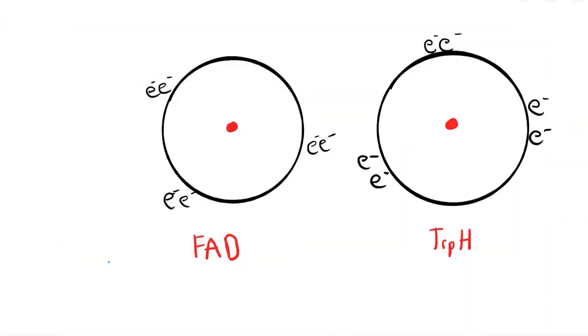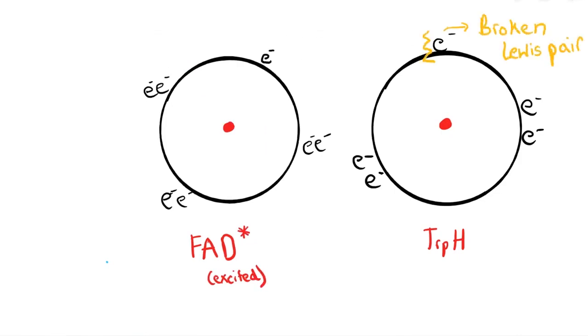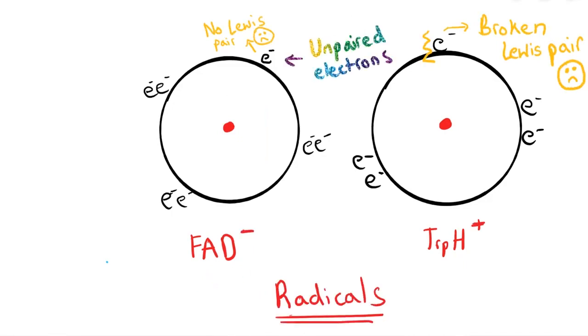When blue light enters the bird's eye and hits FAD, it enters an excited state and one electron jumps from TRIPH to FAD. This breaks the Lewis pair in TRIPH and causes both compounds to now have one unpaired electron. Hence, they become radicals.